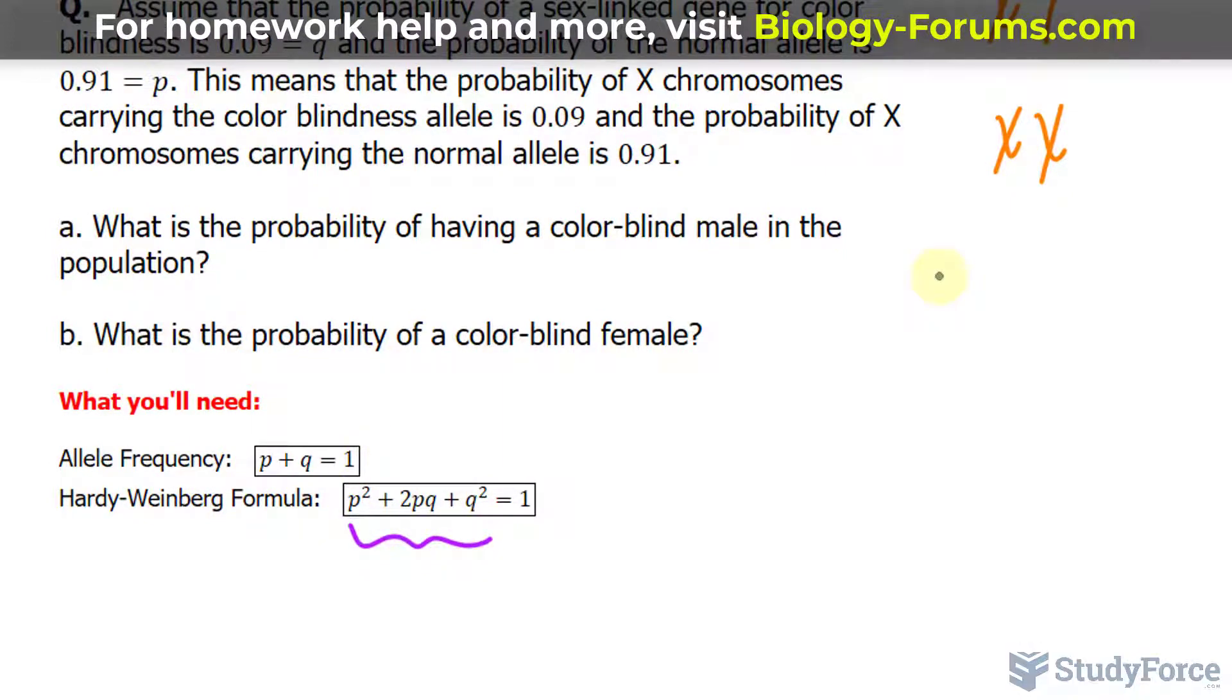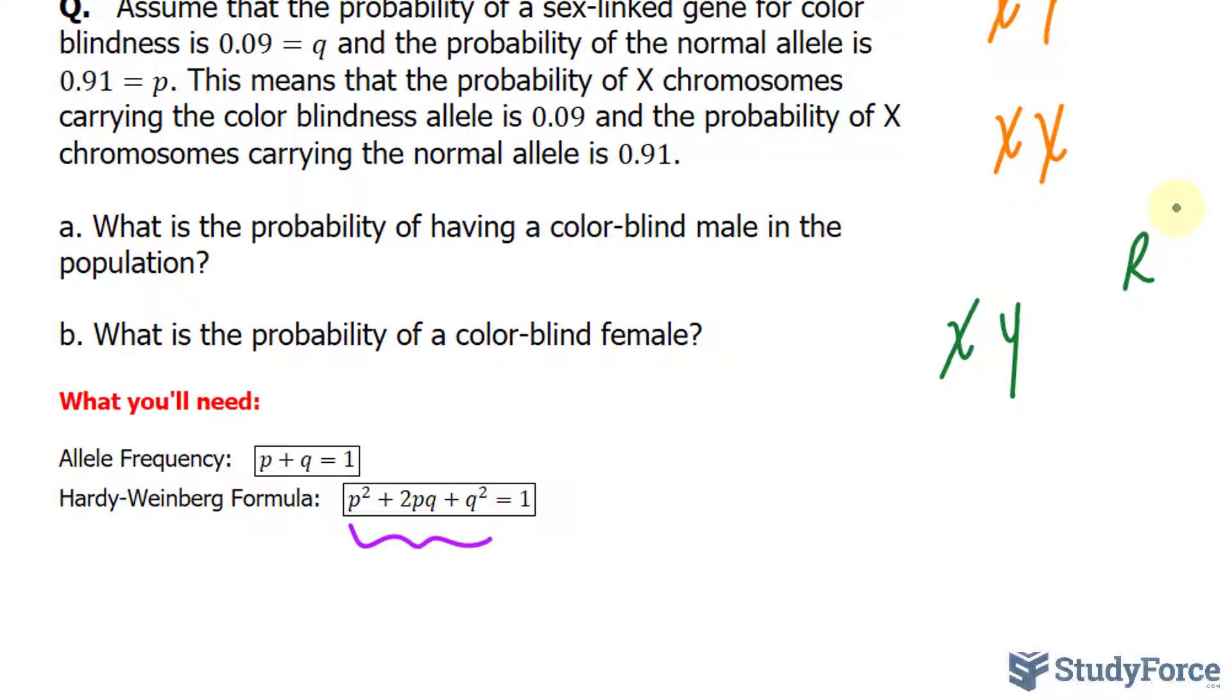Now if a male is colorblind, that means that they inherited the colorblindness gene on their X chromosome. Let's use the letter R to represent the normal gene and little r to represent the defected gene. So on this person's X chromosome, this male, they would have the little r.